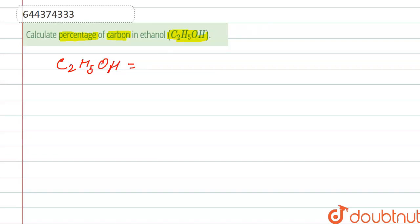Here in C2H5OH, two atoms of carbon are present, five atoms of hydrogen are present, plus one atom of oxygen is present, and also one atom of hydrogen is present.